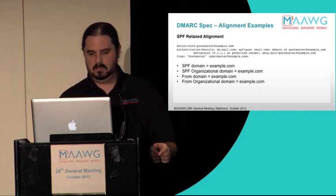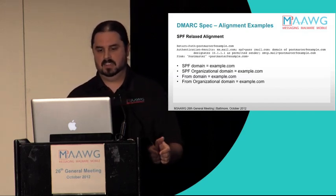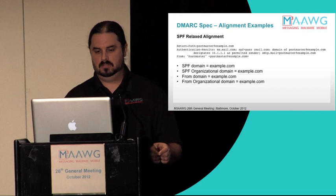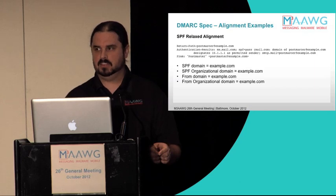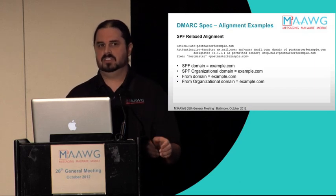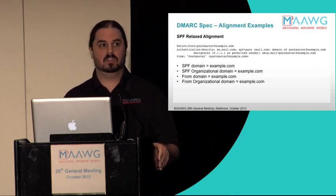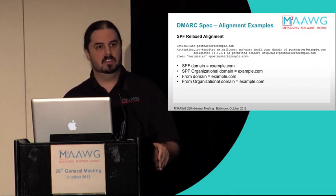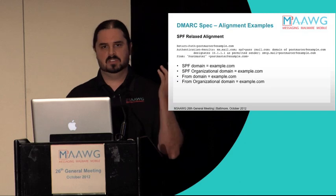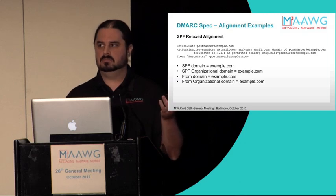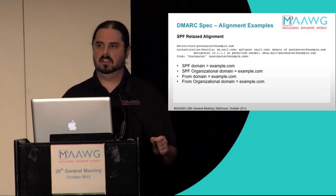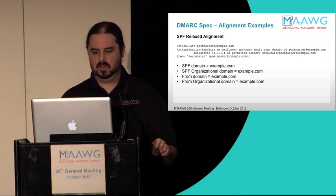Same again with email that is not DKIM-signed. We have SPF with bounce.example.com passing, and a different subdomain foo.example.com in the From. They both share the same organizational domain. You have a single authenticated identifier, which is all you need — therefore this mail aligns according to DMARC.